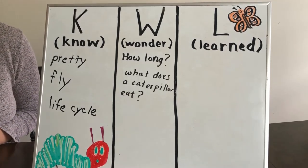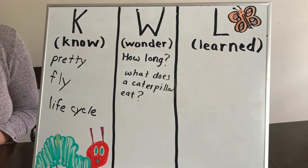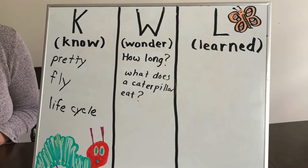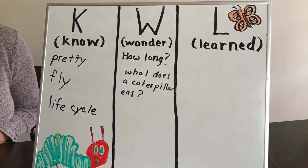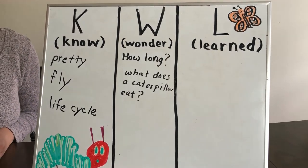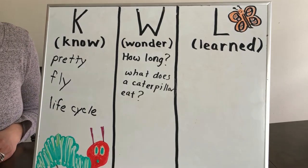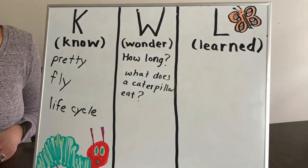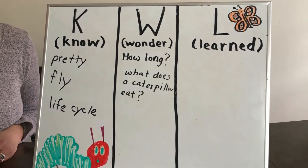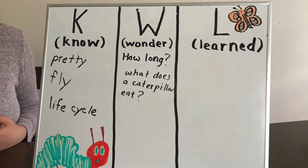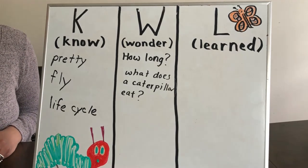The last column — you go back later on and add new information to this learned column after you do some more learning about butterflies. So you would read more books, you would watch more short videos, and then you would come back to your KWL chart and add any new information you find.